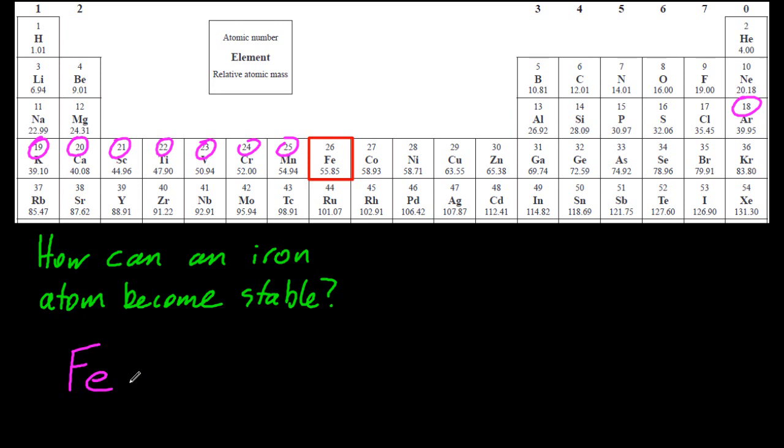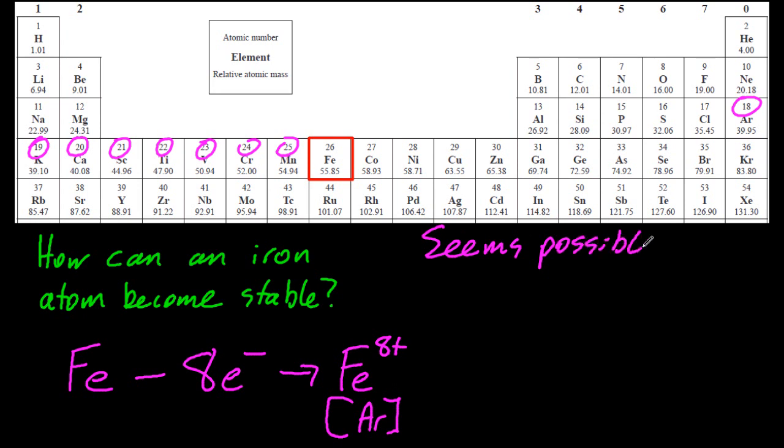Okay, so how many do we have to lose? We have to lose 8 electrons to make it isoelectronic to argon, to have the same electronic configuration as argon. That seems possible, but they've only ever found Fe2+ and Fe3+ ions.